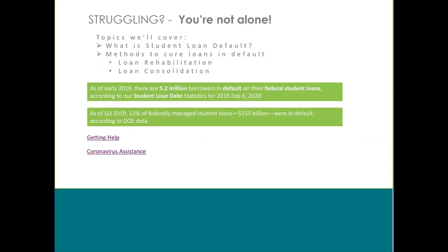We've chosen to start our discussion about student loans with the topic of loans in default, because we see that as a big issue — that's why most people are reaching out to GreenPath. To those who have student loans in default, you're not alone. There are millions of people experiencing difficulty. Because so many people need assistance, the government has had to create programs to help. We're going to cover two specific programs — rehabilitation and consolidation — and we've included web links to the government student aid website. These links will be emailed to you following today's webinar.